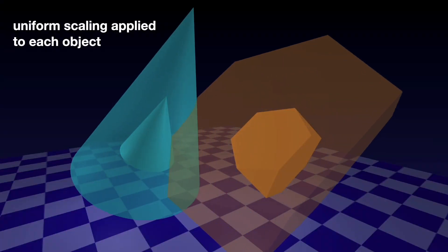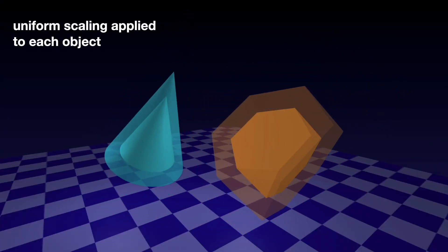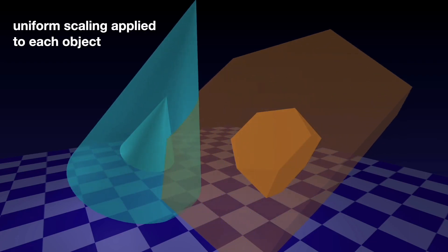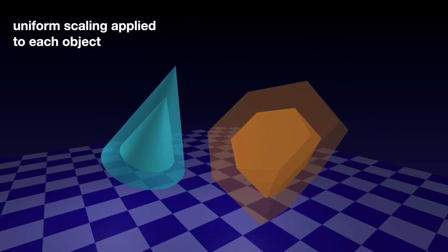DCOL is based on uniform scalings applied to each object, as shown here. For a uniform scaling greater than 1, the objects grow, and for a scaling less than 1, the objects shrink.